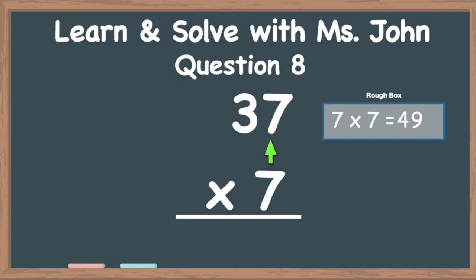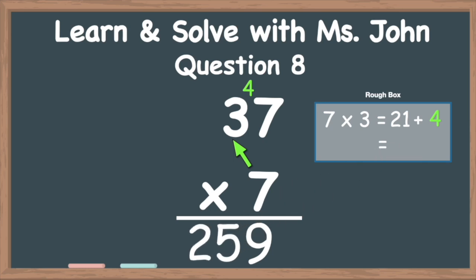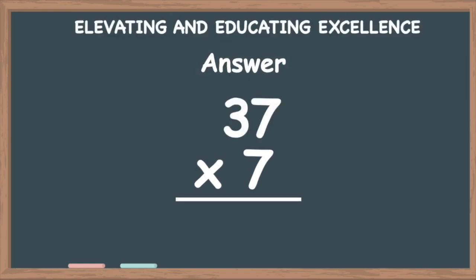Because this is a two-digit answer and we still have some multiplying to do, we're going to put the nine in the ones column of the answer section, and carry that four to the tens column right by the three. Now we're going to do seven times three in the rough box. Seven times three equals 21. We take the carried four and add it to the 21: 21 plus four equals 25. We bring the entire number down to the answer section. The answer is 259.